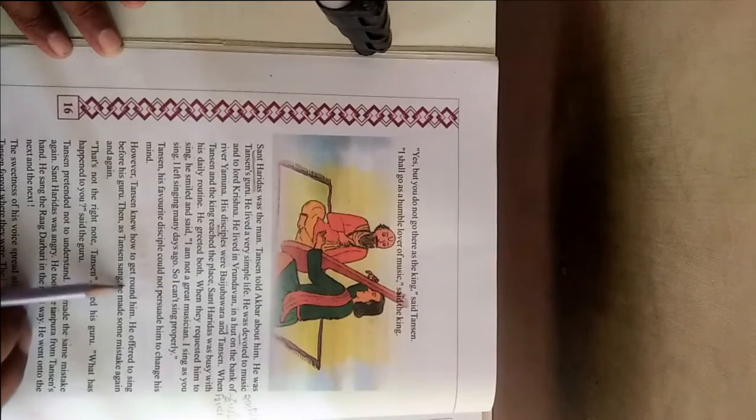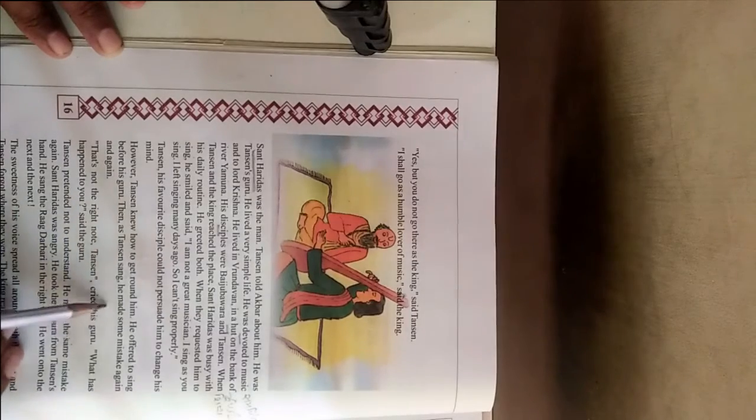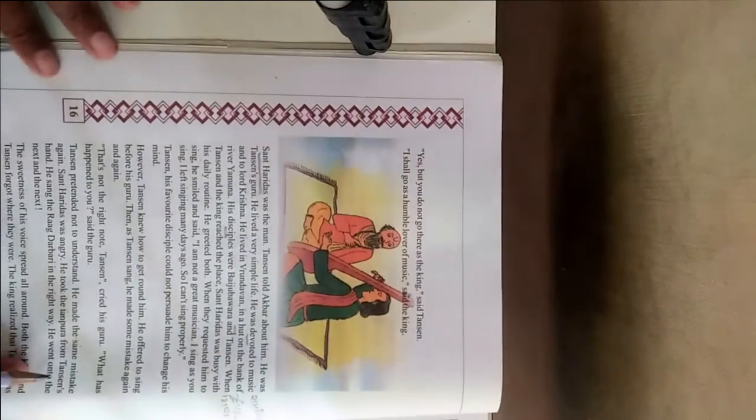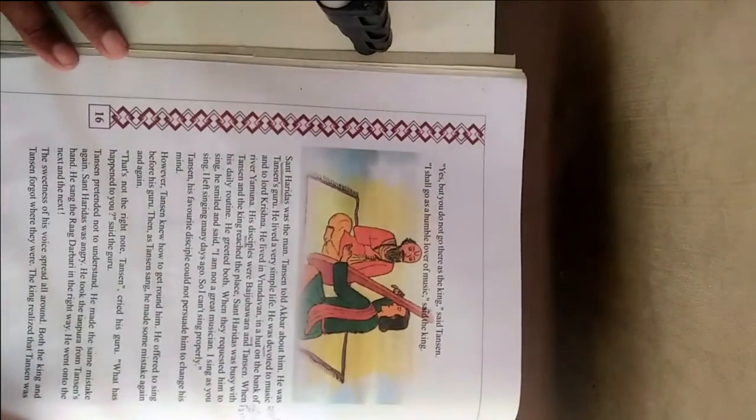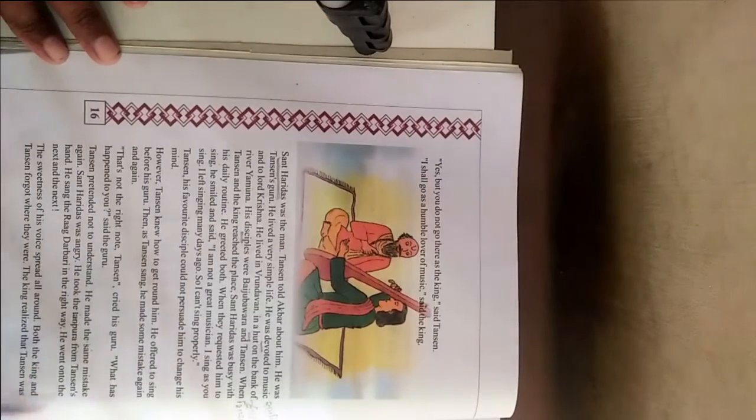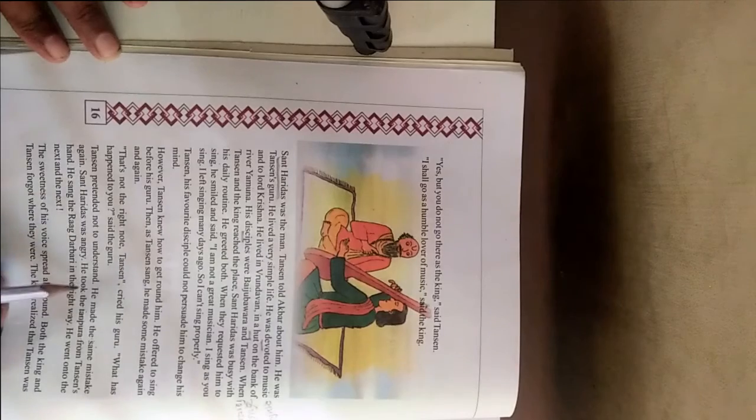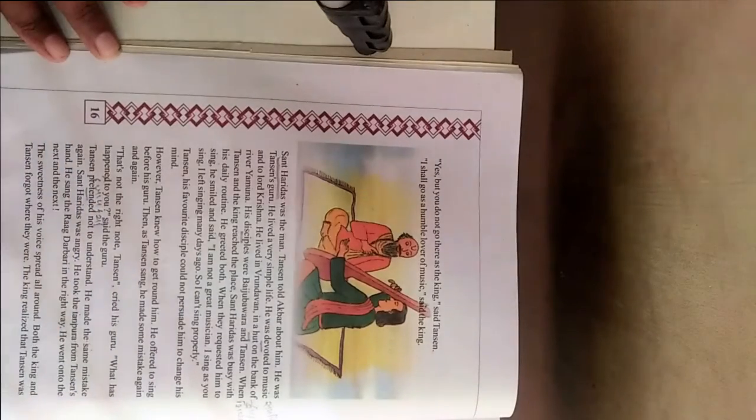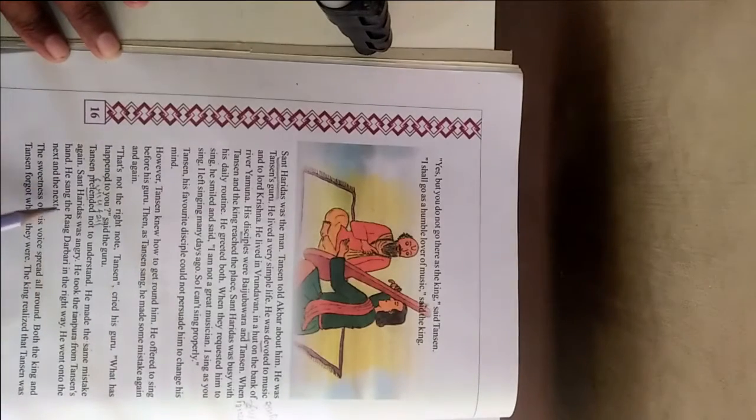However, Tansen knew how to get around him. He offered to sing before his guru. Then, as Tansen sang, he made some mistakes again and again. That's not the right note, Tansen, cried his guru. What has happened to you? said the guru. Tansen pretended not to understand. Pretended means showed. He made the same mistake again. Saint Haridas was angry.